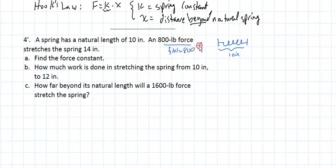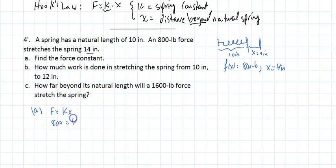The force is 800 pounds and x is 4 inches, because it stretched from 10 to 14 inches—that's 4 inches beyond the natural length. Part a asks to find the spring constant. Using F = kx, we get 800 = k times 4, so k = 200 pounds per inch.